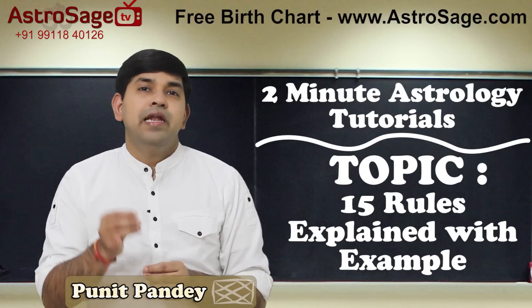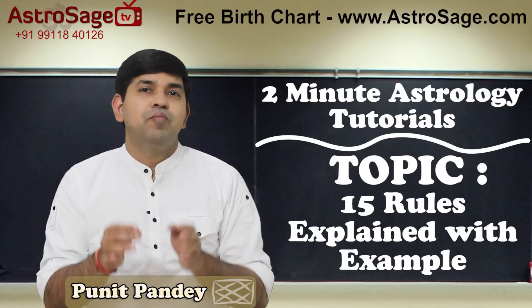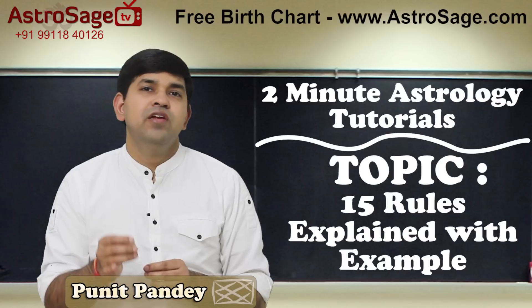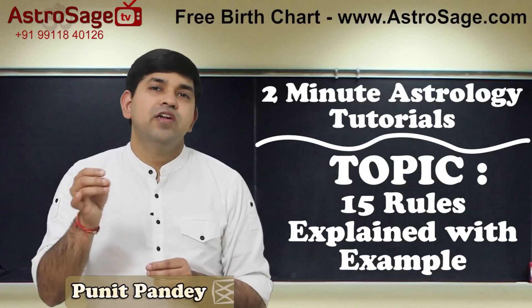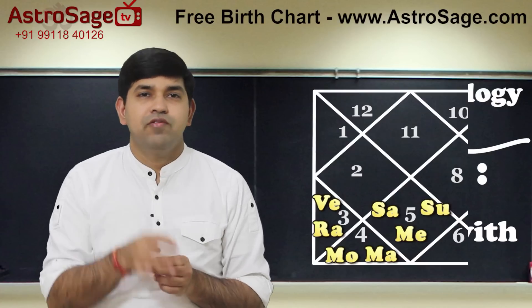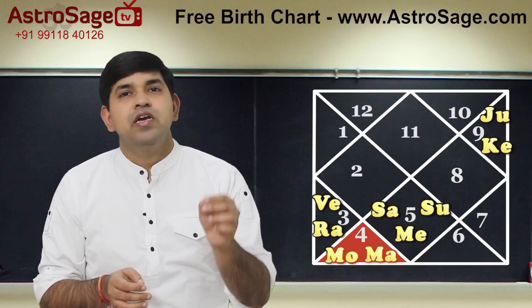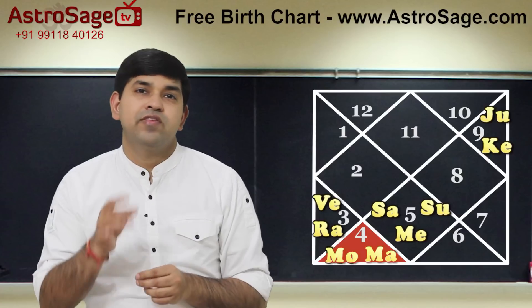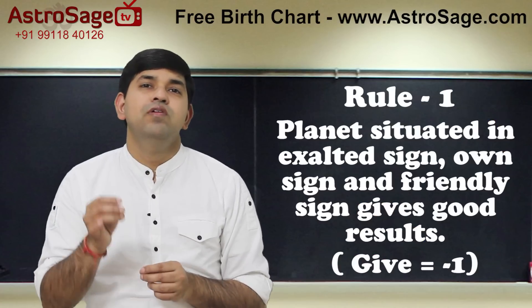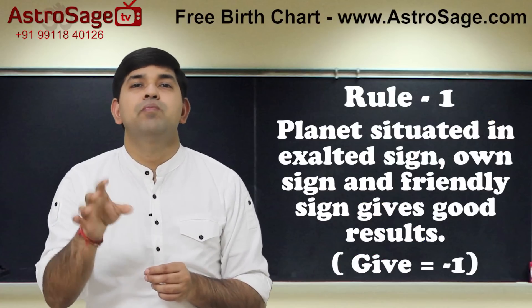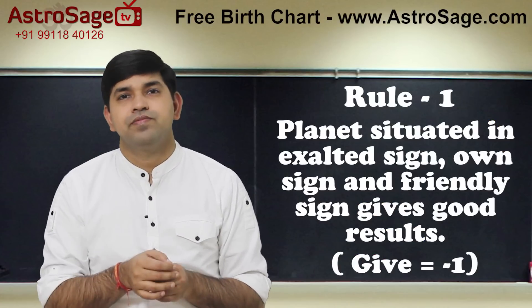Let us take Mars as an example and see what result Mars will give. Mars is in its debilitated sign, Cancer. So let us give minus 1 for rule number 1.